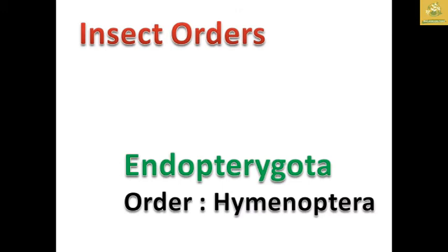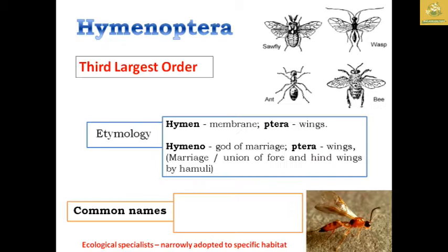In this video, we are going to see about the fundamentals of entomology. I am going to cover the insect order known as Hymenoptera. Hymenoptera is said to be the third largest order. Regarding the name: 'hymen' means membrane and 'ptera' means wings — so membrane wings. The name also derives from 'Hymen,' the god of marriage, meaning a union of four wings with the family. The common names are ants, bees, and wasps. They are ecologically specialized, narrowly adapted to specific habitats.